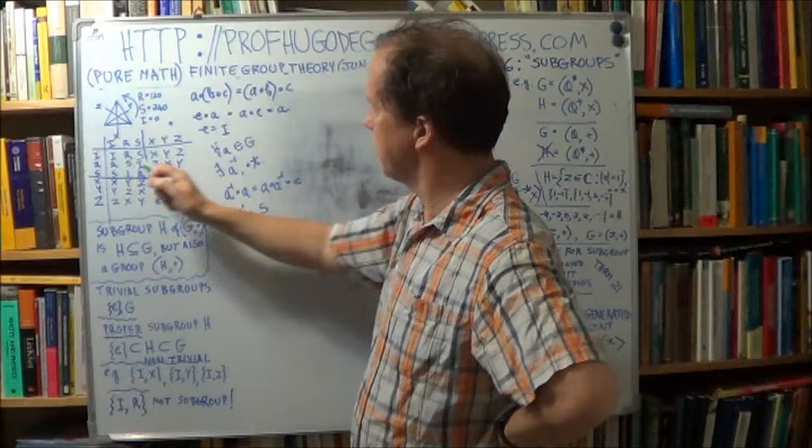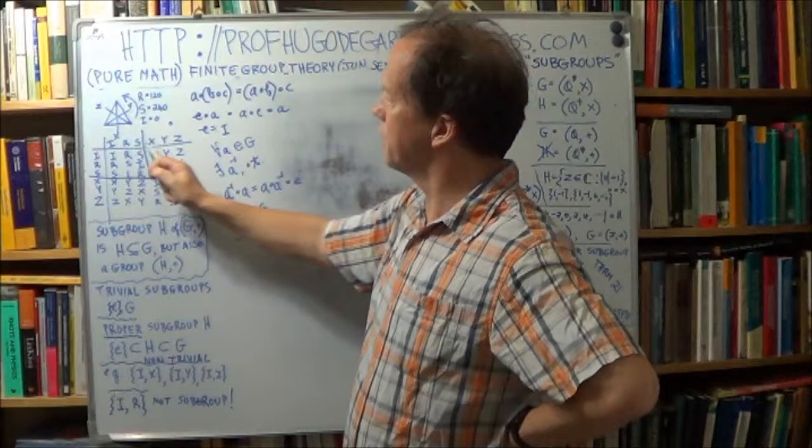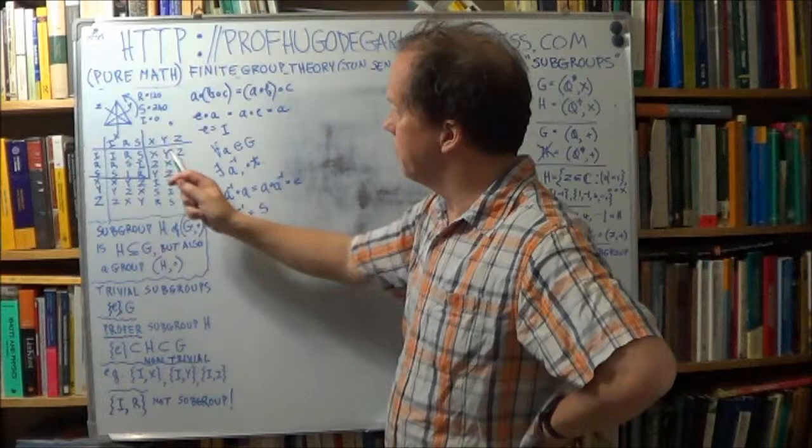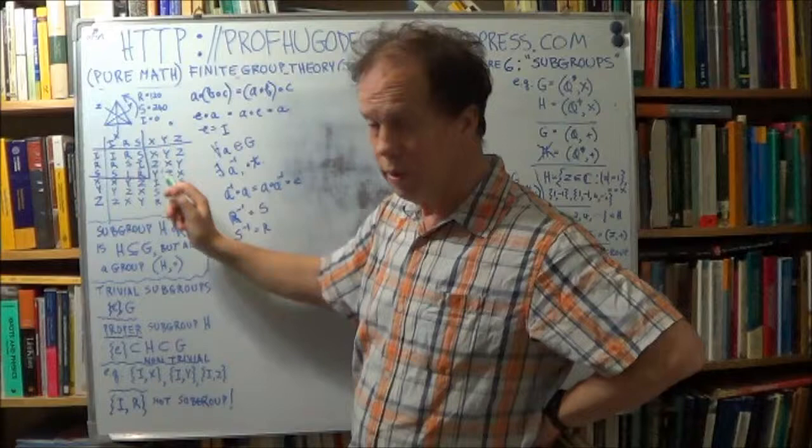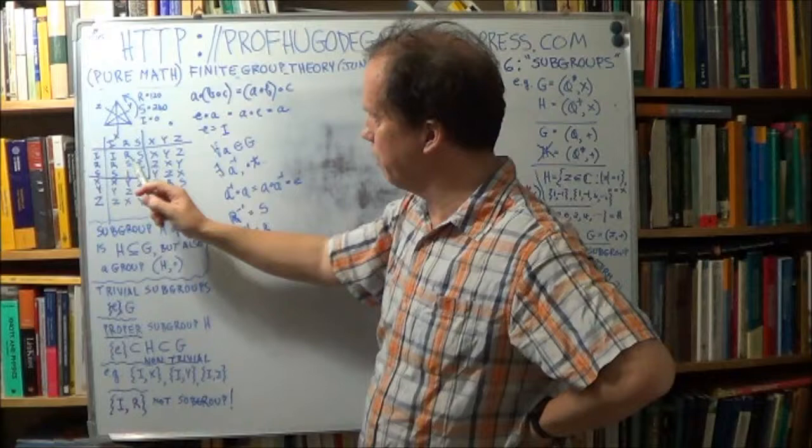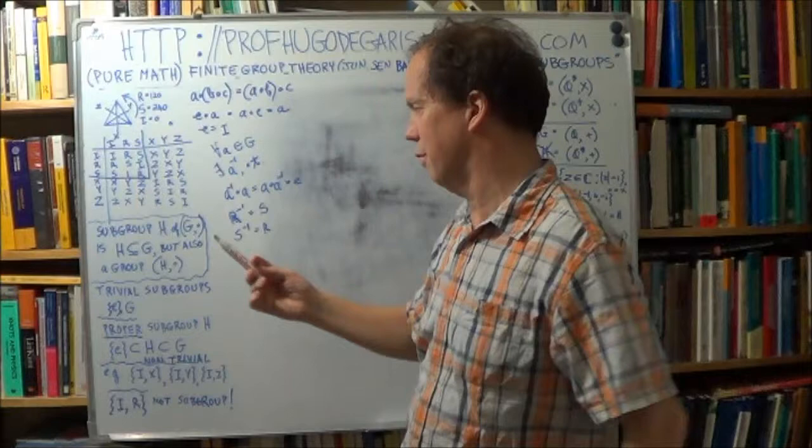We have associativity. We have a unit, it's just I. And we have closure. Therefore, this is a group. But it's obviously a subset, right? I, R, S is obviously, because there's three elements, is obviously a subset of the whole group. Because the order of the group is six, and the order of this subgroup is three. So, it's obviously a subset. So, we have here a subset, a subgroup, because it's also a group, of the whole thing, of the group. So, typically in finite group theory, often, a subset gets labelled by the capital letter H. Sort of like the next letter to G. You know, big G for group. Sort of obvious.